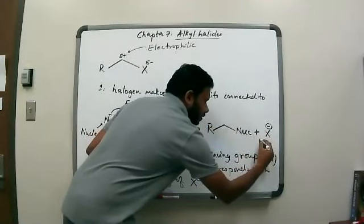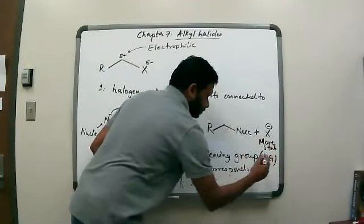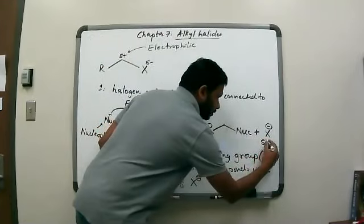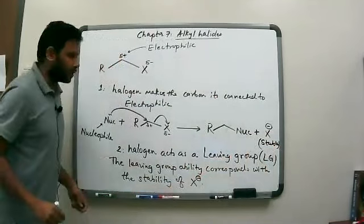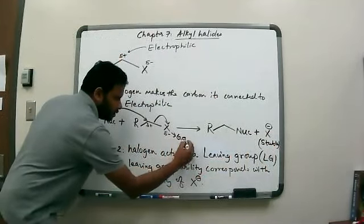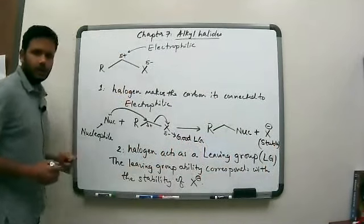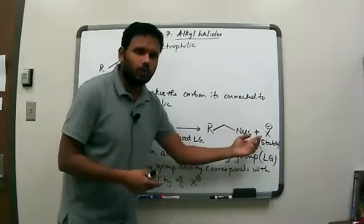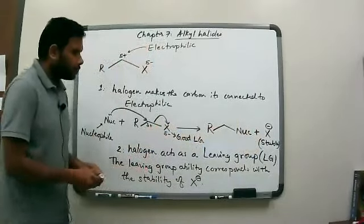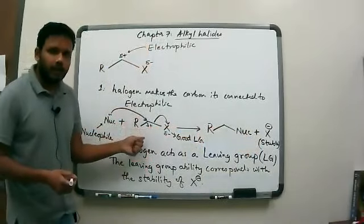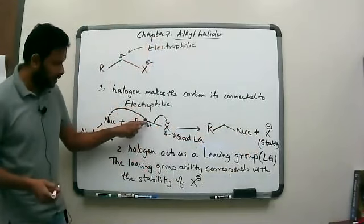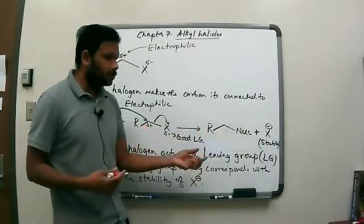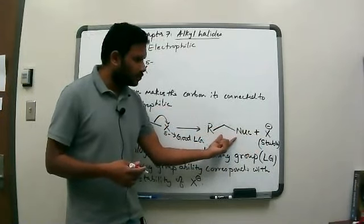If X⁻ is stable, then X is going to be a good leaving group. Once it gets pushed out, it is a stable species, so it would not want to come back and attack. Once the forward reaction happens — the nucleophile attacks, kicks out the leaving group — we get a new molecule and we get X⁻.